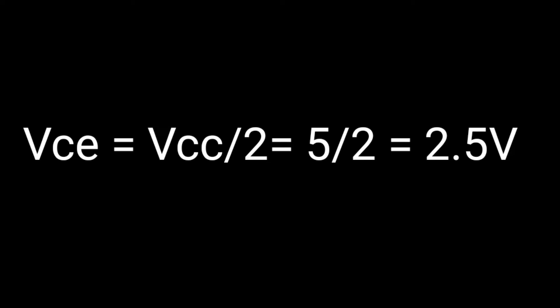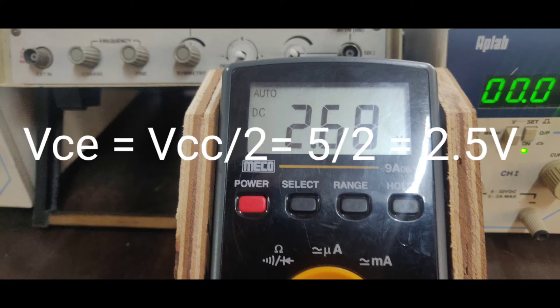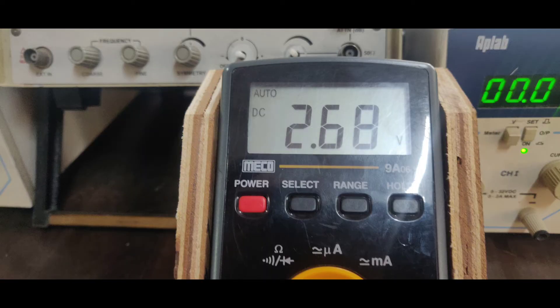See the VCE is actually half of the VCC and it is shown in the multimeter as we got practically 2.6.